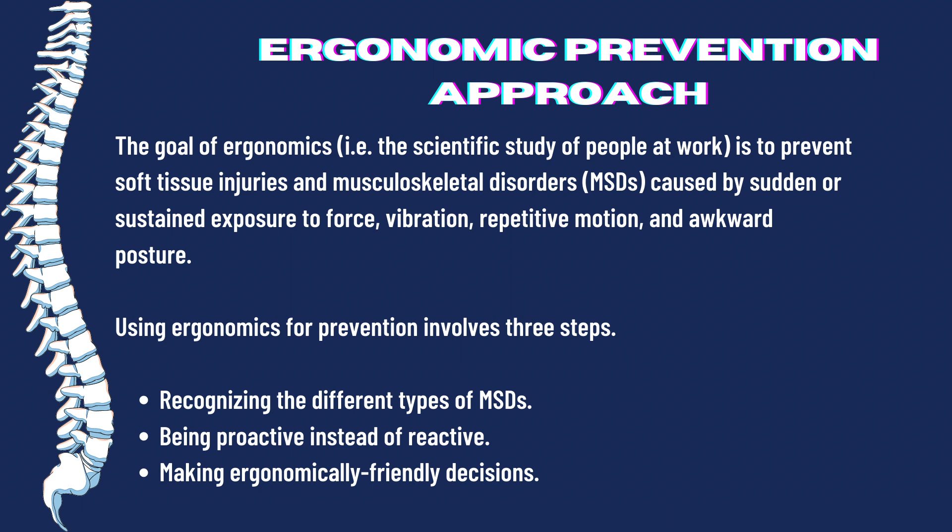The goal of ergonomics is to prevent soft tissue injuries and musculoskeletal disorders caused by sudden or sustained exposure to force, vibration, repetitive motion, and awkward posture. To create an ergonomically sound work environment, NIOSH, ergonomists, and industrial hygienists recommend designing tasks, workspaces, controls, displays, tools, lighting, and equipment to fit employee physical capabilities and limitations. Using ergonomics for prevention involves three steps: first, recognizing the different types of MSDs; second, being proactive instead of reactive; and third, making ergonomically friendly decisions.